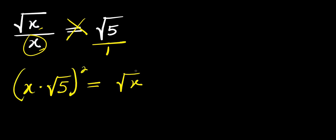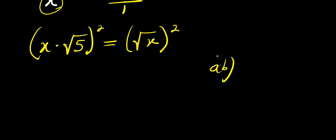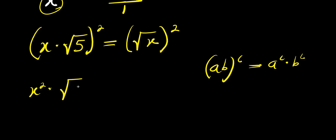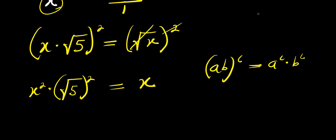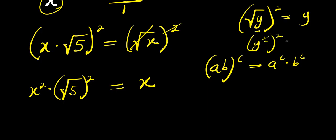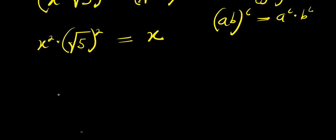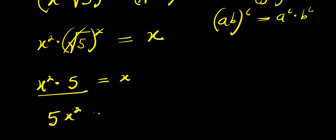We take the squares of this equation. Remember, if you have a times b raised to the power of c, this equals a power c times b power c. So we have x power 2 times square root of 5 raised to the power of 2, and this equals x — because square root of y raised to the power of 2 is just y, since the square root is y to the 1 over 2, and multiplying by 2 gives 1. So we have x squared times 5, that is 5x squared, and this equals x.